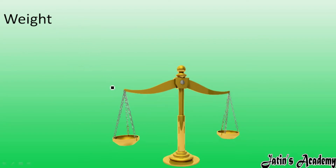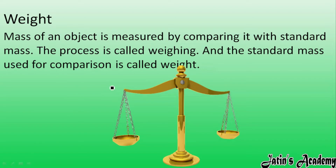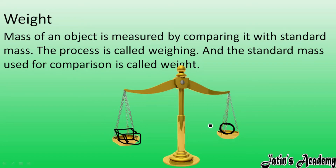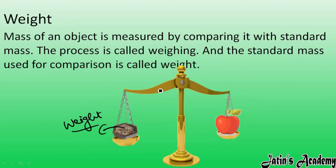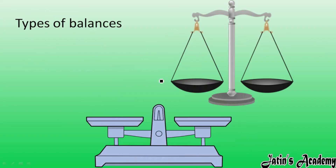Next we are having weight. You might have seen a beam balance — when you measure mass, in one pan you place the object and in the other pan you use standard weights. To measure the mass, we compare it with the standard mass, and this comparison process is known as weighing. The standard mass used for comparison is called a weight, and the process of measuring is known as weighing.